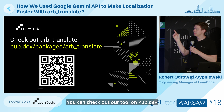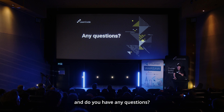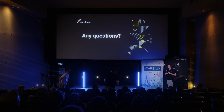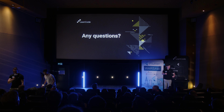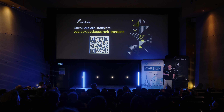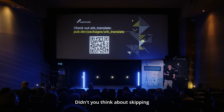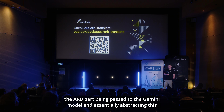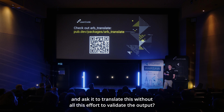You can check out the tool on pub.dev — there will be a QR code to scan. Question from the audience: did you think about skipping the ARB format being passed to Gemini and abstracting it away, so you would just send the content of the term and ask it to translate without all the effort to validate the output?